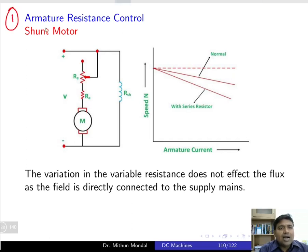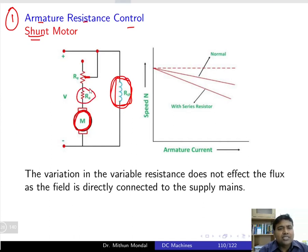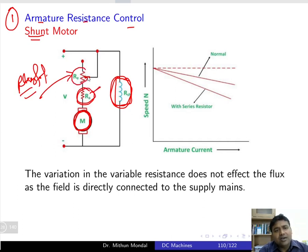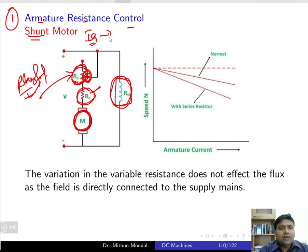For armature resistance control, we consider the shunt motor, where the field winding is connected in parallel with the armature. A rheostat is connected in series with the armature. By sliding the moving contact of the rheostat, the resistance increases or decreases, controlling the armature current.